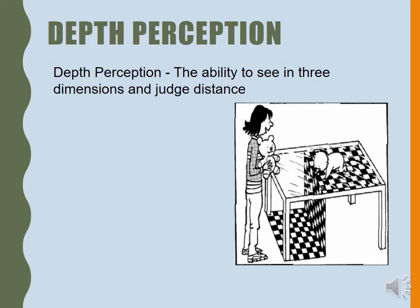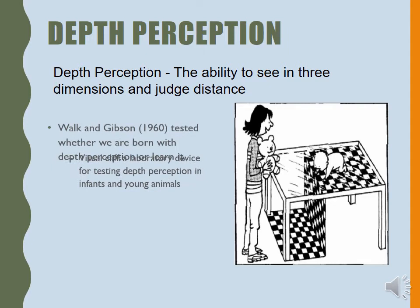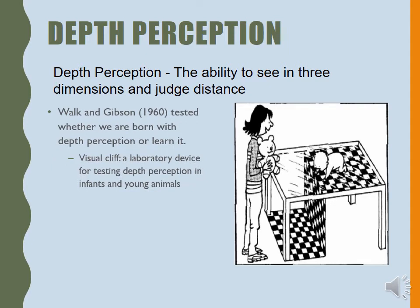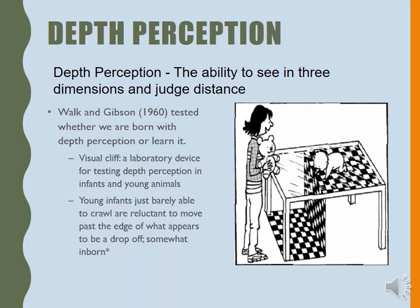Depth perception is our ability to see in three dimensions and judge depth or distance. This was originally studied by Walk and Gibson in 1960. They constructed a visual cliff and were interested in when infants and young animals perceive depth. With young infants, they put them on the cliff side, really close to the edge, and asked their moms to call them over to see if they would cross. Most infants would stop moving and refuse to go over the edge, which made us think this was probably inborn — innate, part of your biology.